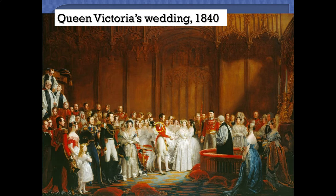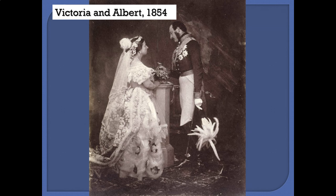Here she is on her wedding day — she got married just a couple of years into her reign. She married a German prince, Prince Albert, and they went on to have nine children together. It's one of the great romances in history; they were deeply in love. They also happened to be first cousins, so yeah, that's kind of weird. Prince Albert is going to die much earlier than Queen Victoria — in fact, she is going to outlive her husband by about 40 years.